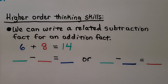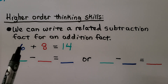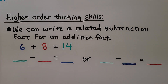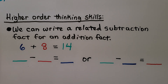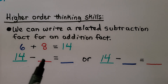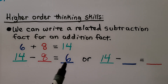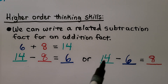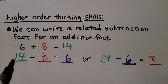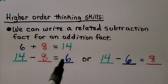Let's try some higher order thinking skills. We can write a related subtraction fact for an addition fact. Here's our addition fact — our numbers are a 6, an 8, and a 14. To write a related subtraction fact, we take the sum and make it the minuend — that's the whole amount we're subtracting from. Then we have a 6 and an 8; we can put the 8 here and the 6 here: 14 minus 8 is equal to 6. We can also switch them: 14 minus 6 is equal to 8. Notice the minuend is the same for both subtraction facts; we only switched around those two numbers.